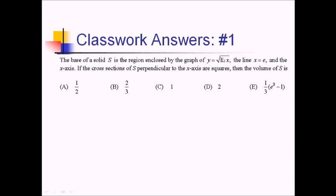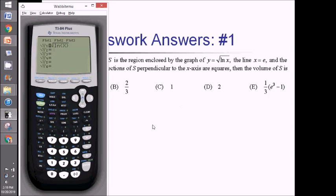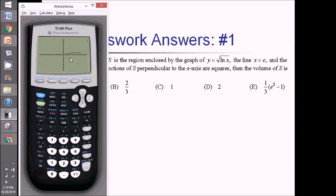I'm going to start by graphing out this bounded region on my calculator. I've got the square root of ln of x entered as y1. Let me just do a zoom 6 to see basically what that looks like. I could probably zoom in a little bit more.